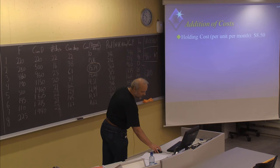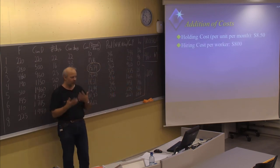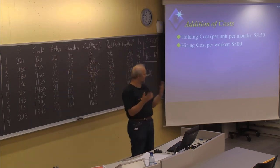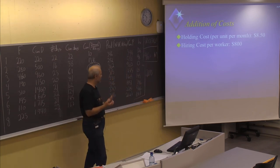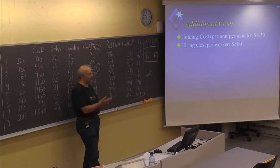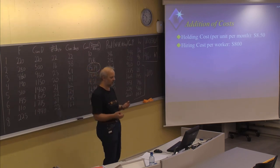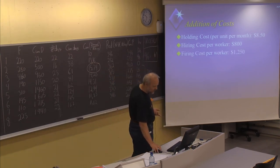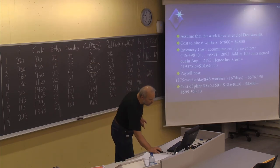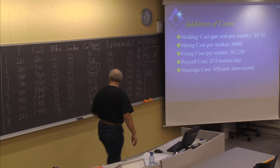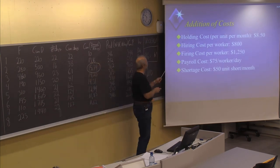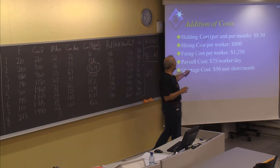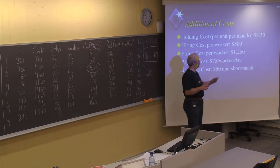If we now add costs, we will try different production plans and see which are cheapest or most expensive to choose between. We have different costs. The holding cost, also called inventory cost, is the cost of storing one item or unit per month, which in this case is $8.50.